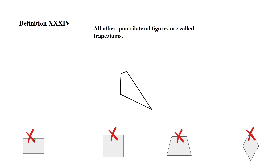Definition 34: all other quadrilateral figures are called trapezums. So all other four-sided figures that are not squares, oblongs, rhomboids, or rhombuses are called trapezums. This isn't a square because all the sides are not equal; it isn't an oblong because the angles are not all right angles; it isn't a rhomboid because the opposite sides are not equal to each other; and it isn't a rhombus because the sides are not equal.